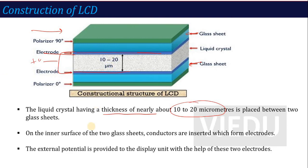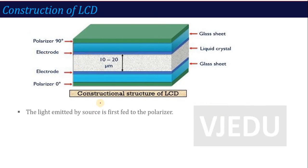The external potential is provided to the display unit with the help of these two electrodes, where we apply the external potential. The next point is that the light emitted by the source is first fed to the polarizer. Now, this liquid crystal is covered with two glass sheets, which we have put on the electrode, where we apply the voltage.